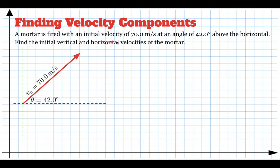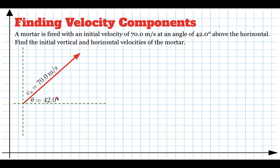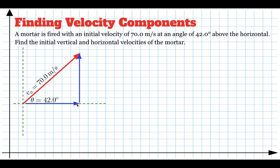It's going to go up, up, up, and then over and come back down. We have to figure out how fast this mortar is moving in the x direction and how fast it's moving upwards when it's launched. Because if it's not horizontally launched, its initial velocity upwards is not zero — it's definitely moving upwards with some velocity.